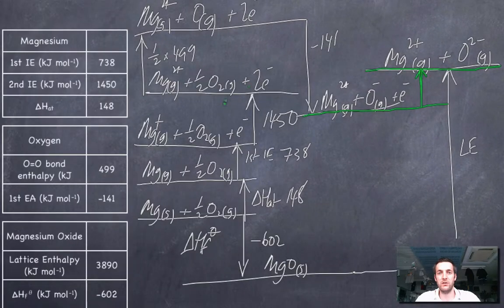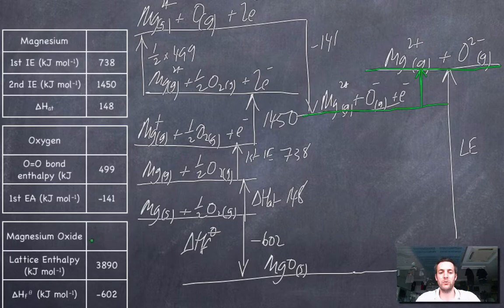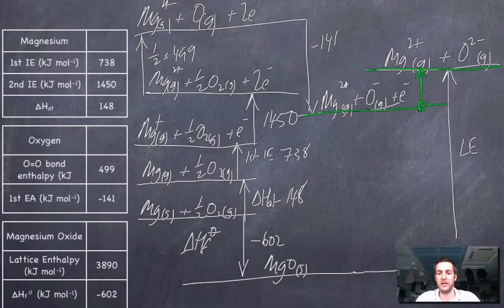So, first thing to note, what we've done here so far is we've shown where all these bits of information fit on a Born-Haber cycle and what's written on each level, including the state symbols. Now that we've got this Born-Haber cycle, we can calculate this value here. Because we're going from here to here, but we can't go that way, so we need to go round this loop.